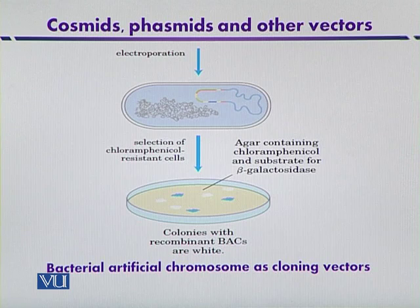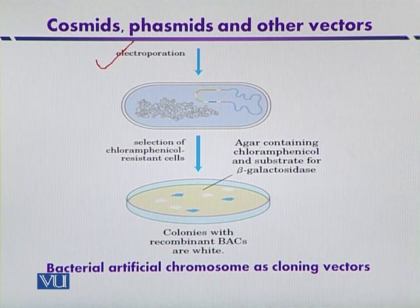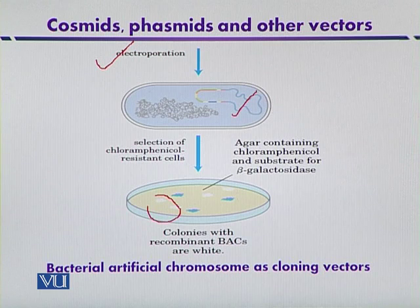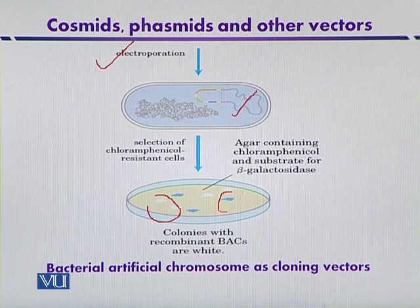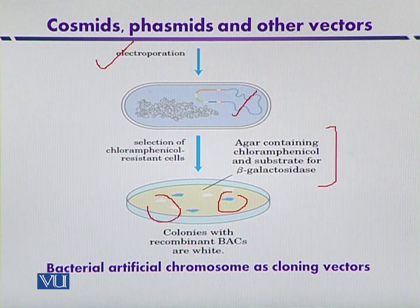In the next step, when foreign DNA is ligated within the bacterial artificial chromosome, electroporation is used to insert the foreign DNA along with the BAC into the host organism. They are then selected on the basis of selectable markers. Colorless colonies indicate the lack of beta-galactosidase activity and confirm the presence of foreign DNA, whereas blue colonies indicate the absence of foreign DNA. Agar containing chloramphenicol and a substrate for beta-galactosidase can act as selectable markers. This is one of the strategies used to clone larger DNA fragments using bacterial artificial chromosomes.